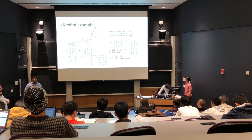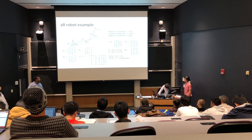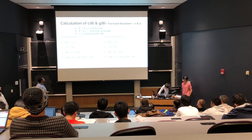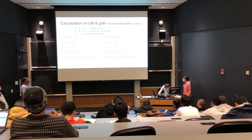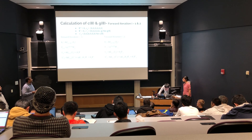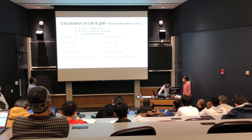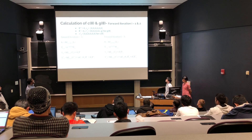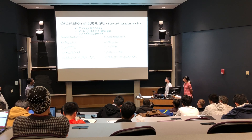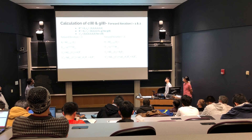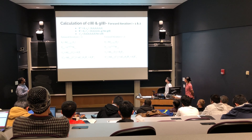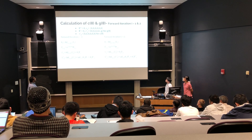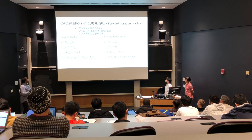We started with the initial configuration of thetas arbitrarily chosen to be pi/6 and pi/4, with joint angular velocity equal to one radian per second. The setup for calculating c(theta) and g(theta): for both, theta double dot is zero and the base frame twist is all zeros. For g(theta), v_dot_zero equals the gravity vector and theta dot is zero. For c(theta), v_dot_zero is all zeros.